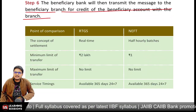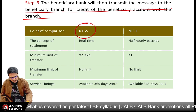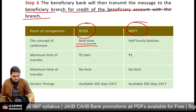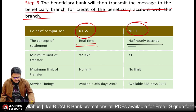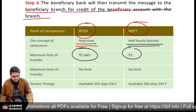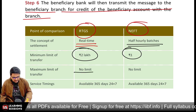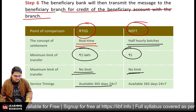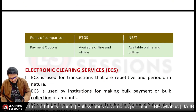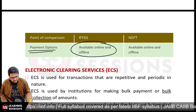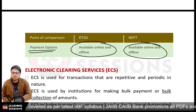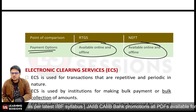Now let's compare RTGS and NEFT. In RTGS there is real-time settlement; in NEFT there are half-hourly batches. The minimum amount for RTGS is Rs. 2 lakh; for NEFT the minimum is Rs. 1. There is no upper limit in both scenarios. Both are available 24x7, 365 days. Both are available online as well as offline — through internet banking applications or by visiting a branch.